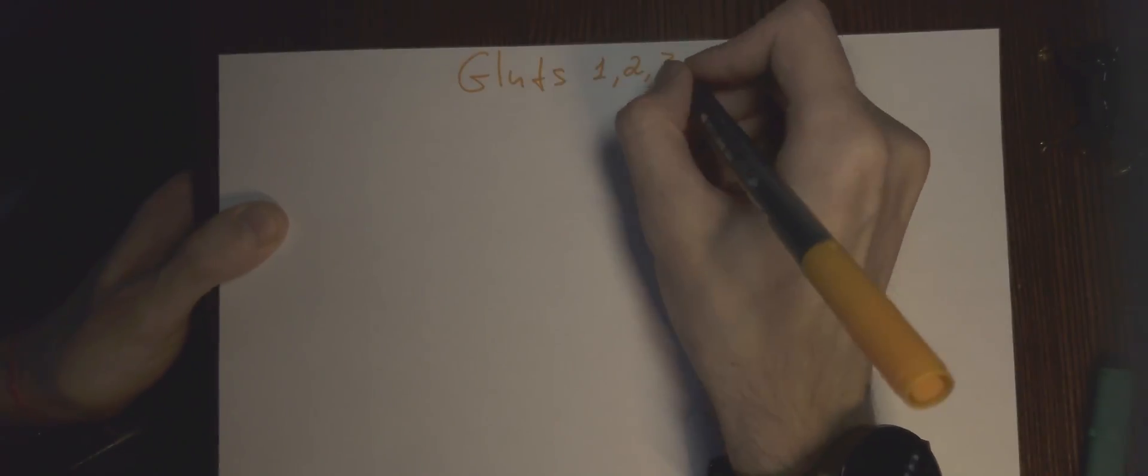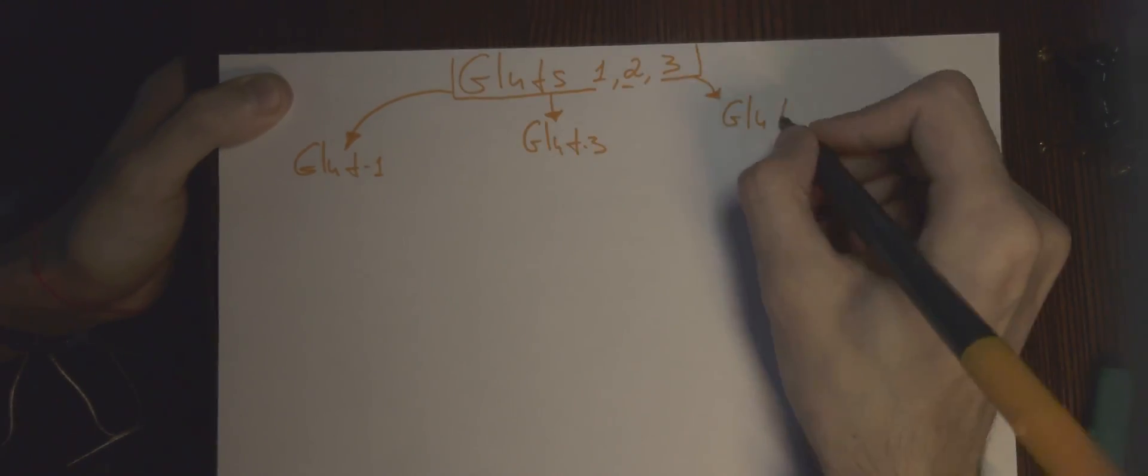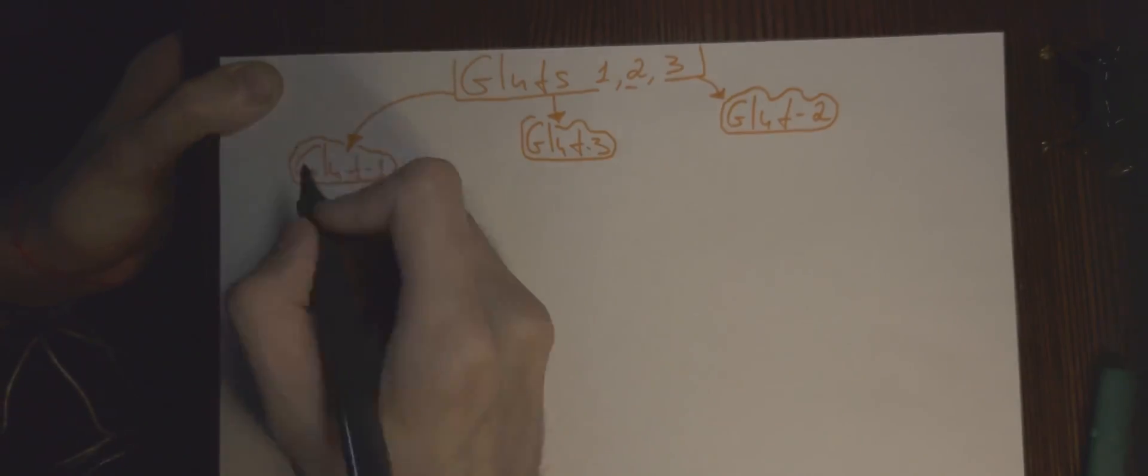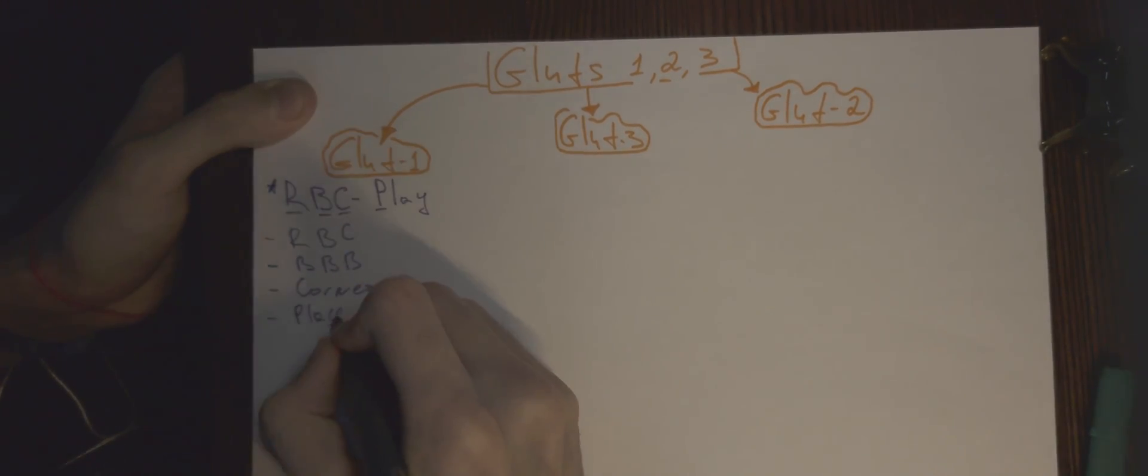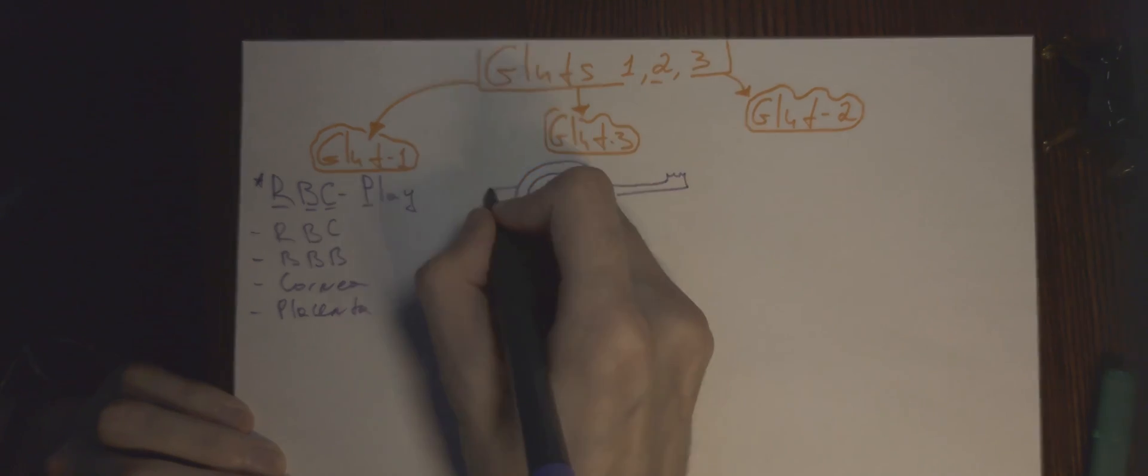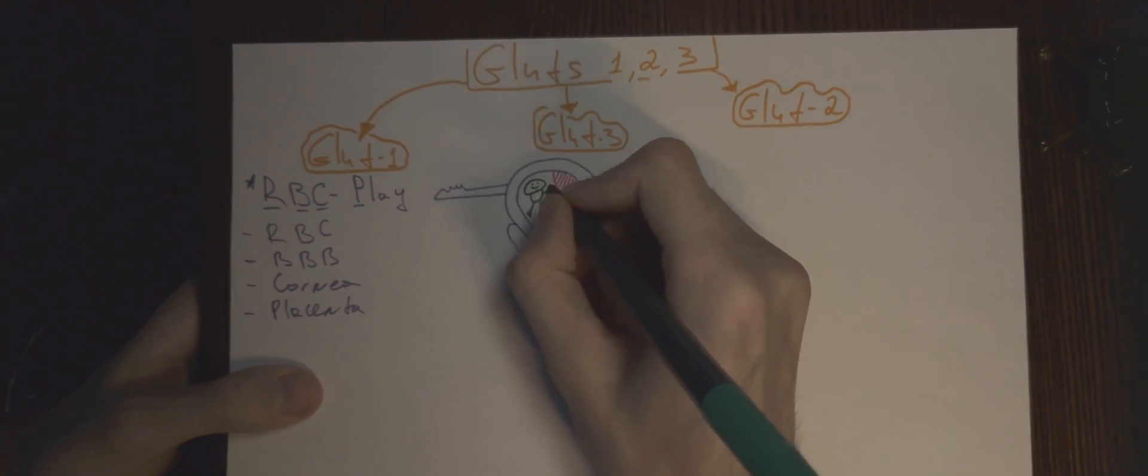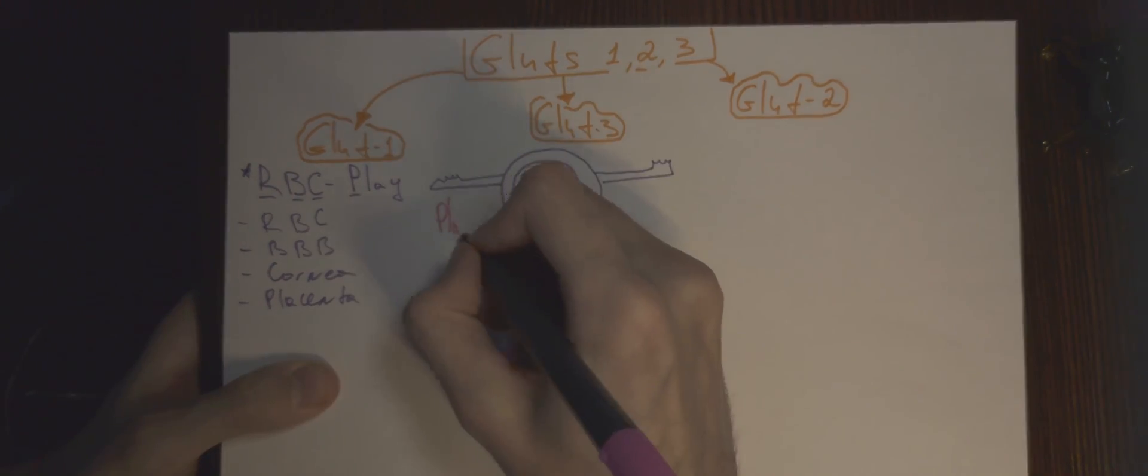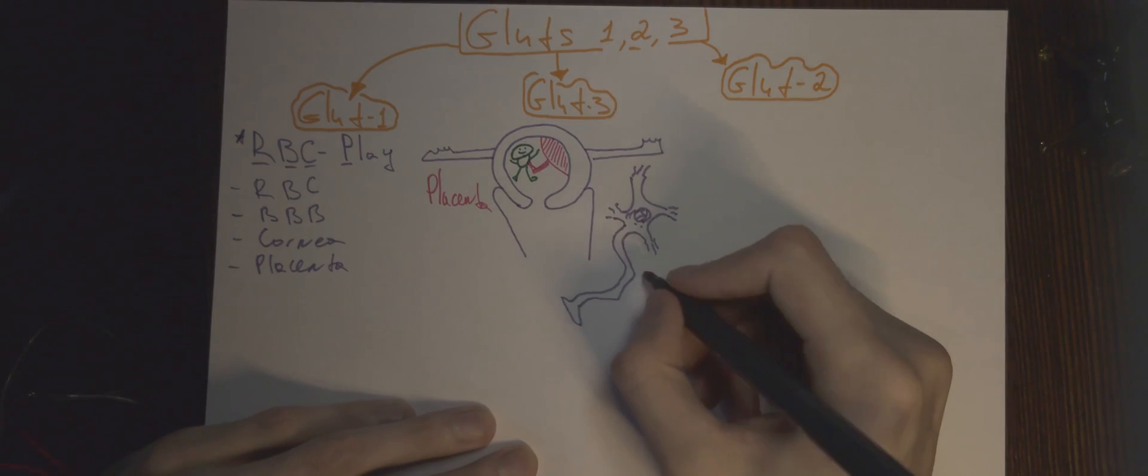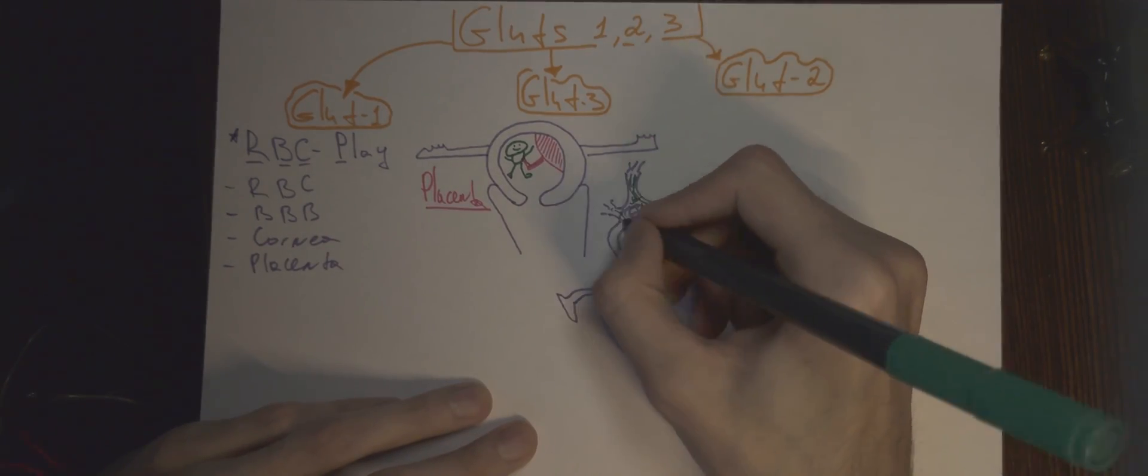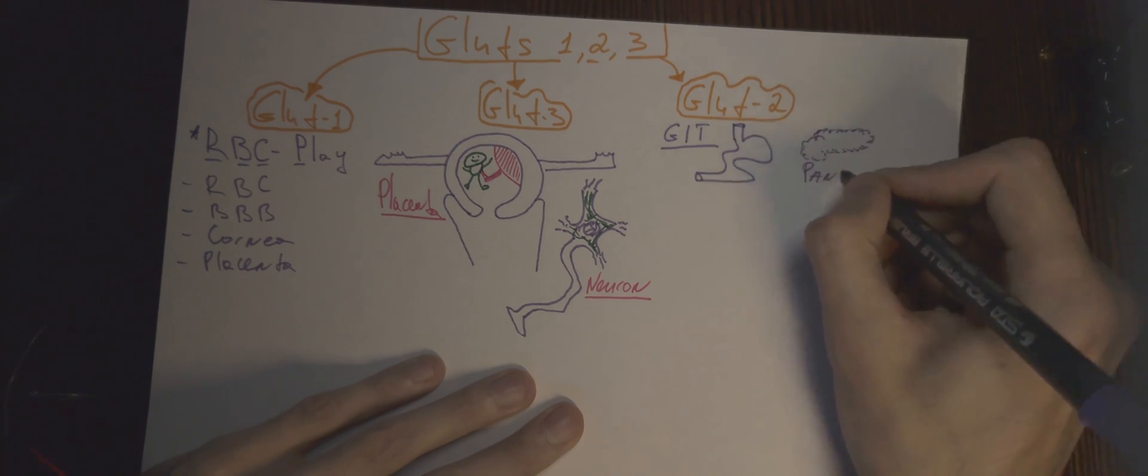Glucose transporters type 1, 2 and 3 are widely distributed all over the body. Type 1 localization can be remembered via the simple mnemonic RBC play, which stands for red blood cells, blood-brain barrier, cornea and placenta, whereas glucose transporter type 3 can be found inside placenta and neurons. GLUT2 resides in GIT, pancreas, liver and kidney.